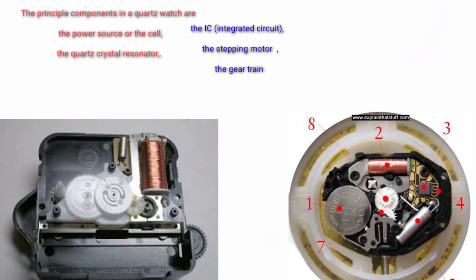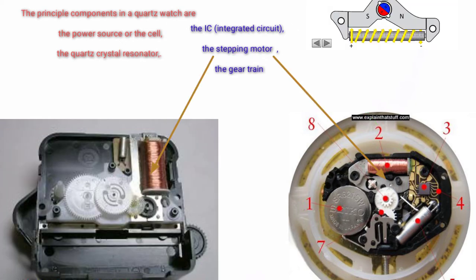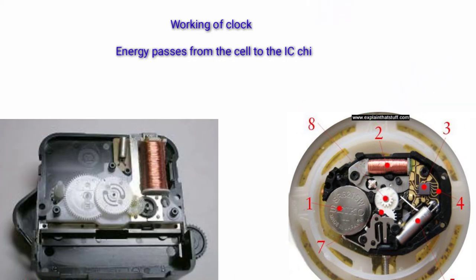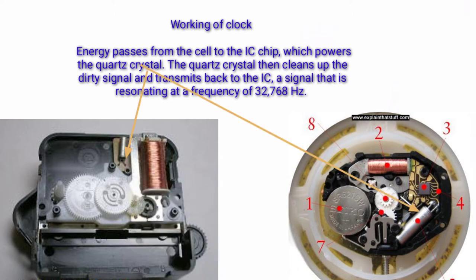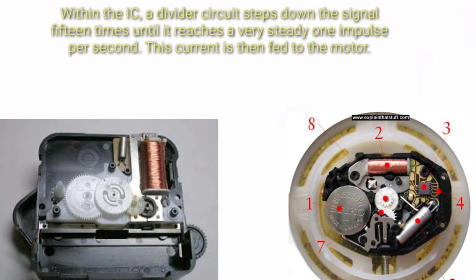The principal components in a quartz watch are the power source of the cell, the quartz crystal resonator, the IC integrated circuit, the stepping motor, and the gear train. Energy passes from the cell to the IC chip, which powers the quartz crystal. The quartz crystal then cleans up the dirty signal and transmits back to the IC a signal that is resonating at a frequency of 32,768 hertz. Within the IC, a divider circuit steps down the signal 15 times until it reaches a very steady one impulse per second. This current has been fed to the motor.